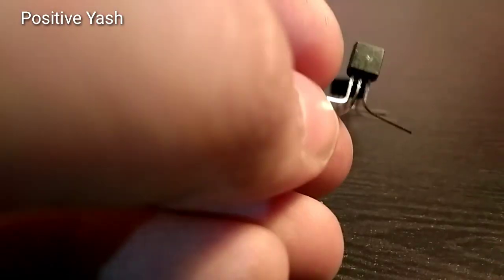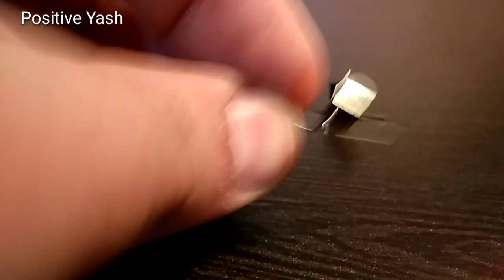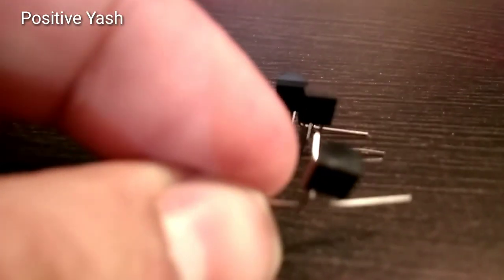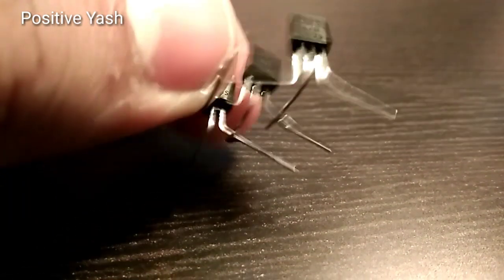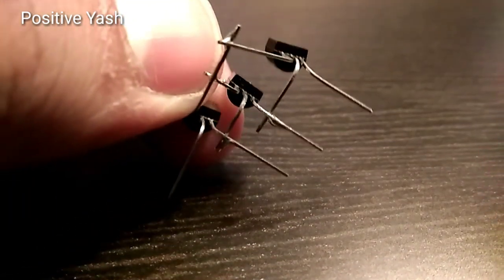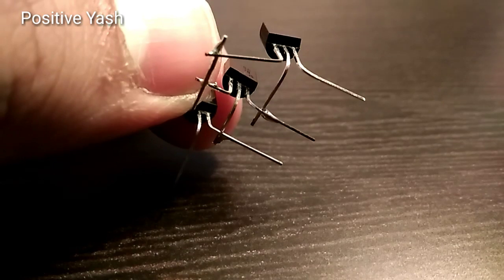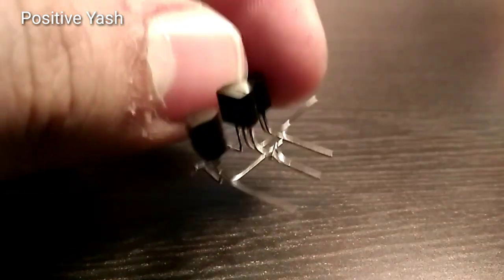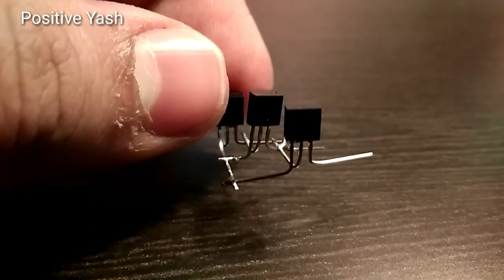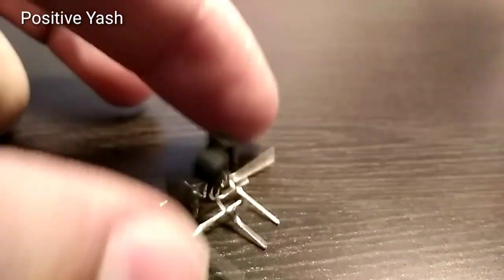Then connect the third transistor like the second. Its base pin to the emitter pin of the second transistor, and collector pin the same. Then solder it like this.